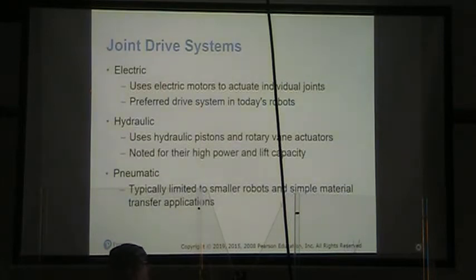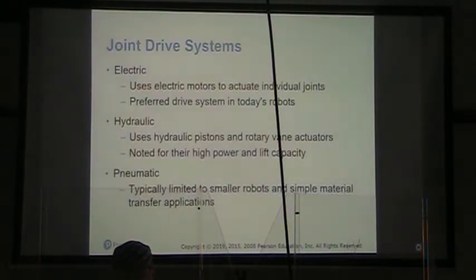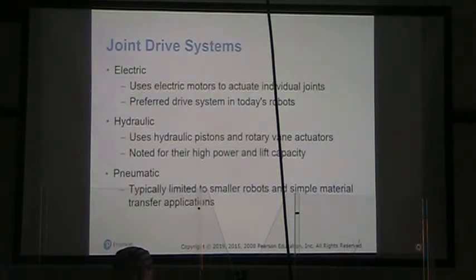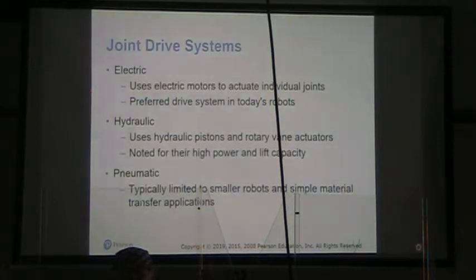What are some ways to drive these joints? The first is electric — using electric motors to actuate the joints, which is the usual drive system in today's robotics. Hydraulic uses hydraulic pistons and rotary vane actuators, noted for high power and lift capacity. Pneumatic is typically used in smaller robots and simple material transfer applications.